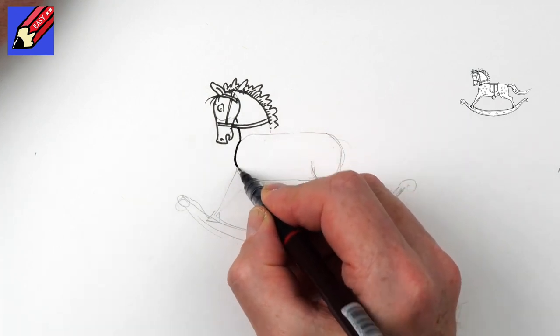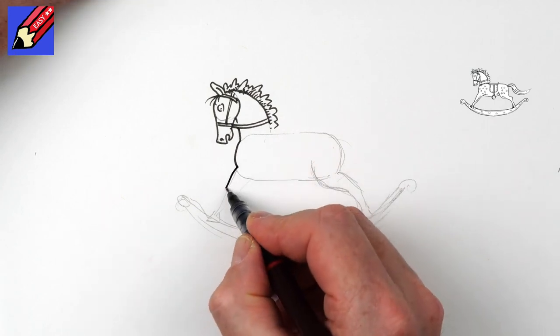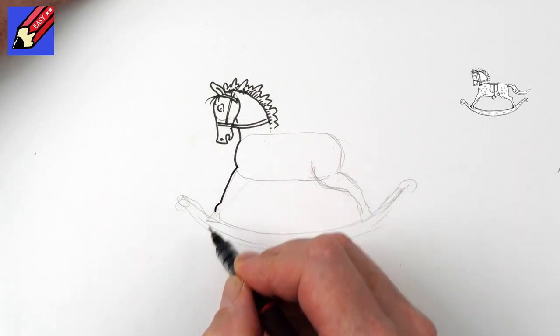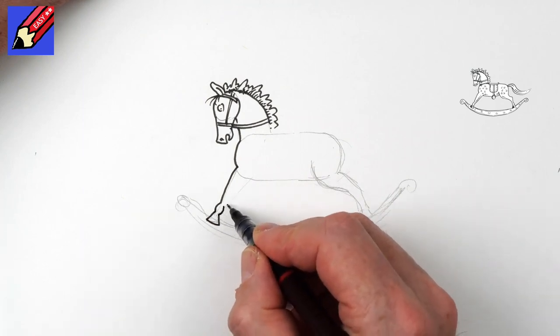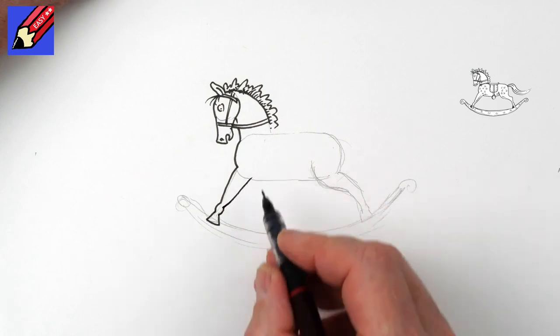So it's coming down there, around in a curve, and then we want this to come down here. Bit of a little lump there, and then we want the hoof at the bottom. And then that can come to there.